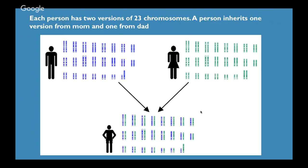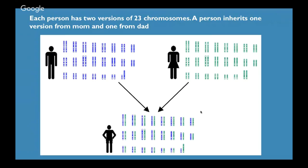People have chromosomes — each is a very compact structure containing DNA. Each person has two versions of 23 chromosomes, inheriting one version of each chromosome from their mother and one from their father. In this figure, you can see the male on the top left has 23 pairs of blue chromosomes, the woman on the top right has the green chromosomes, and the child ends up with a copy from each parent. This will help us later when we start talking about the inheritance of DNA.